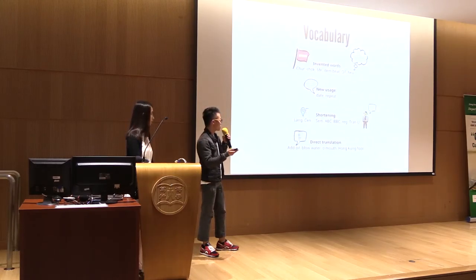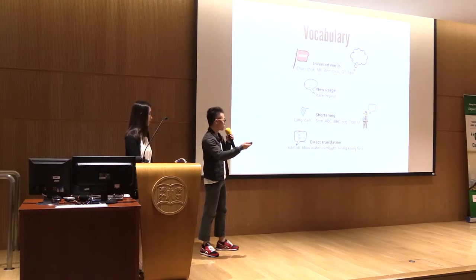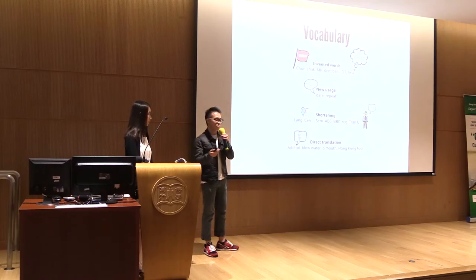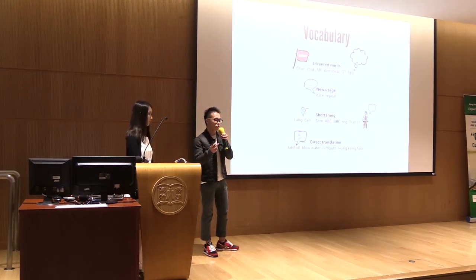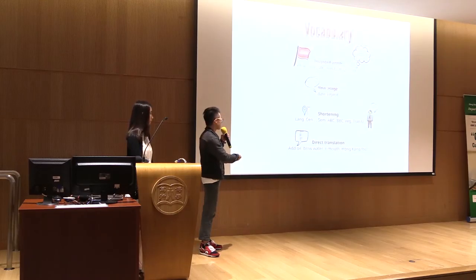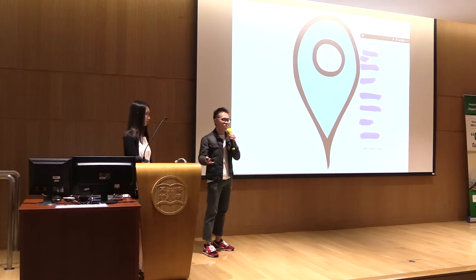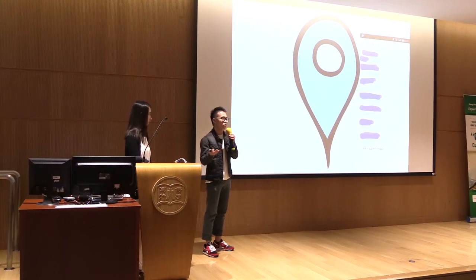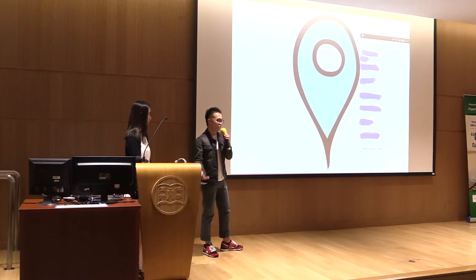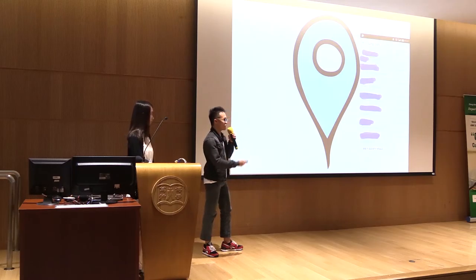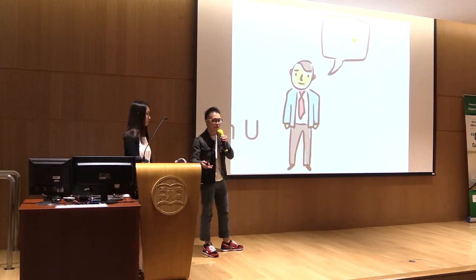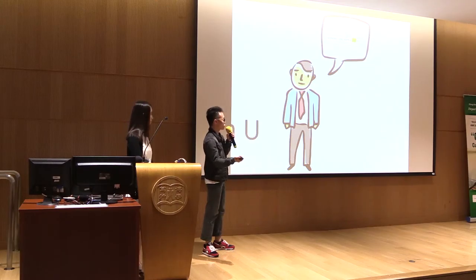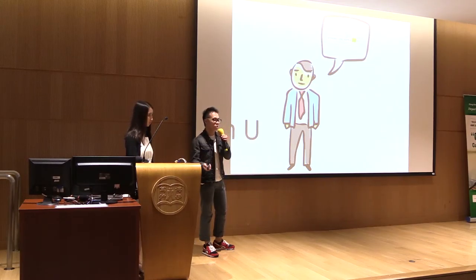The third category is shortening, which includes acronyms such as ABC and BBC — taking the initials of each word to form a new term — and clipping, like 'Langsang,' which actually means 'language center.' At HKMC we have a language center, and we just say 'Langsang' because it's easy to say — it's monosyllabic and conforms to Cantonese phonological rules. 'Tran yu' is another frequently heard term, meaning 'I want to transfer to university' — go to another school.